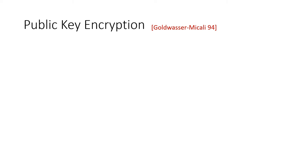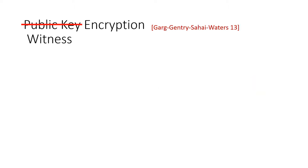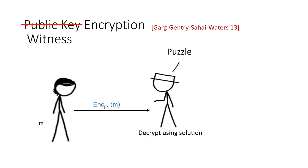What if the receiver only ever published a verification key for a digital signature scheme for which they possess the corresponding signing key? Can we still do public key encryption? Or what if the receiver published a hard puzzle for which they only possessed a solution? This question was one of the original motivations for the study of witness encryption, where Garg et al. showed that it is possible to encrypt a message so that it can only be opened by a recipient that knows an NP witness.